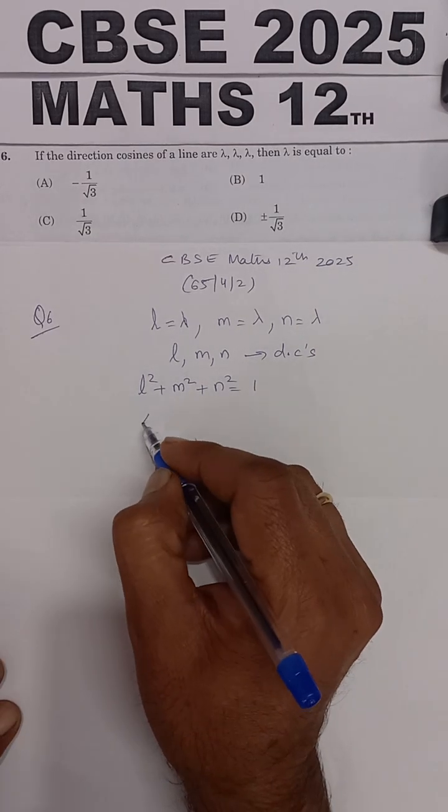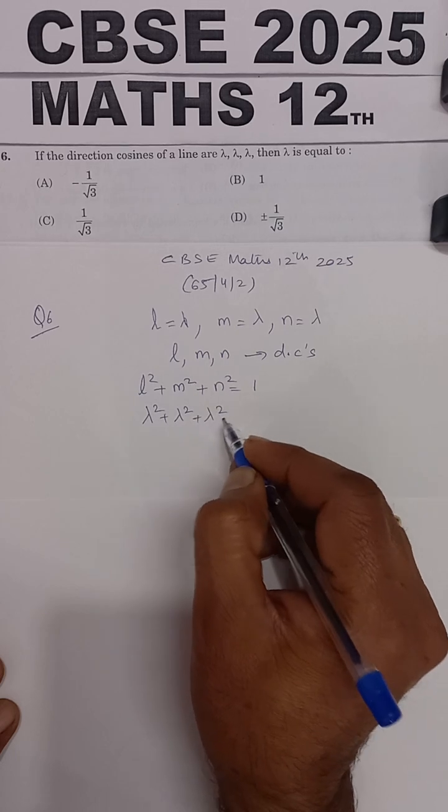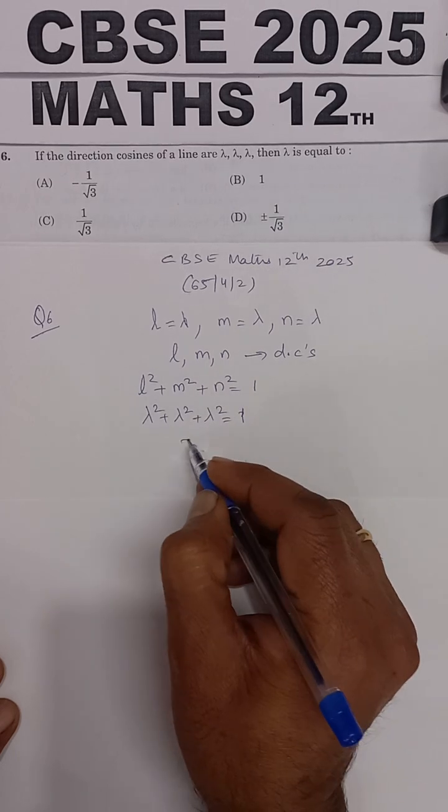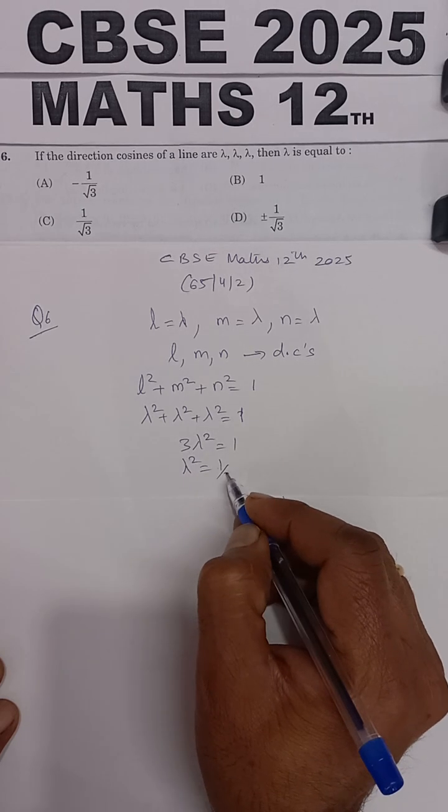Substituting the values, lambda square plus lambda square plus lambda square is equal to 1. So 3 lambda square is equal to 1, or lambda square is equal to 1 by 3.